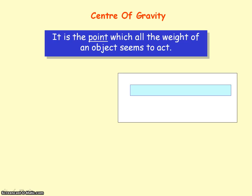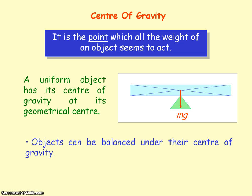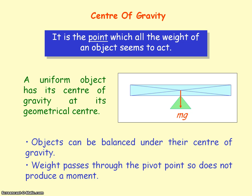Centre of gravity is the point through which all the weight of an object seems to act. For a uniform object — one with uniform shape and density — its centre of gravity is found at its geometrical centre. So the weight of the object will act at the centre of the object. Objects can be balanced under their centre of gravity because the weight passes through the pivot point, so it doesn't produce a moment.